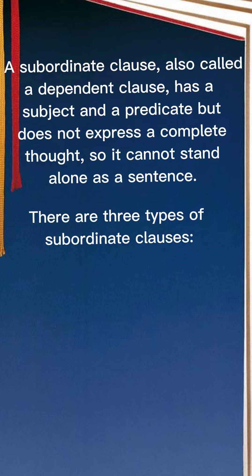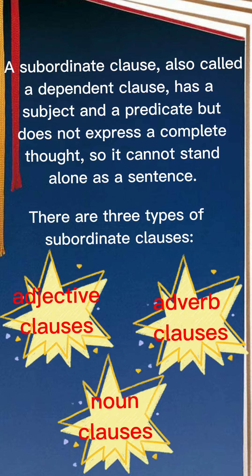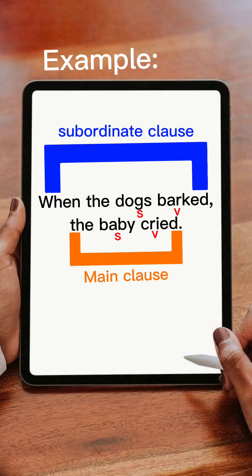There are three types of subordinate clauses: adjective clauses, adverb clauses, and noun clauses. Example: When the dogs barked, the baby cried.